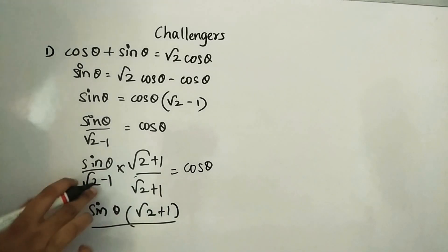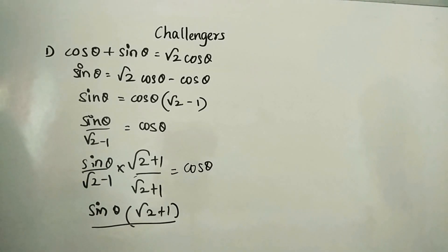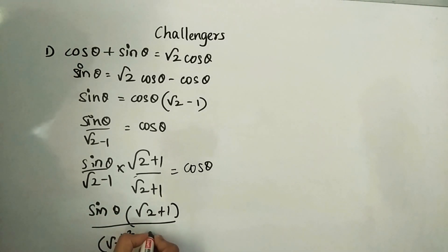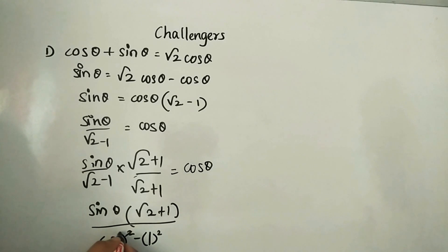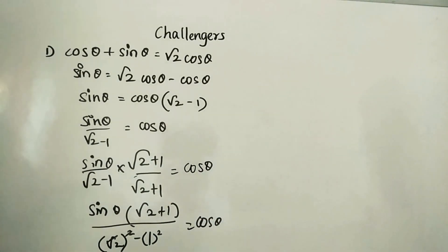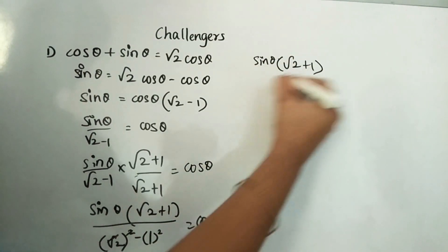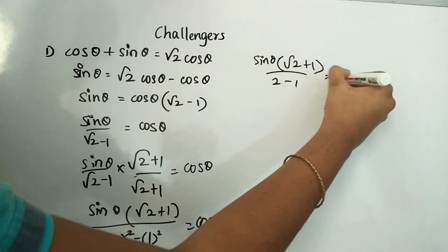We recall the formula (a − b)(a + b) = a² − b². So (√2 − 1)(√2 + 1) = (√2)² − 1² = 2 − 1 = 1. So sin θ(√2 + 1) divided by 1, which means sin θ = cos θ equals sin θ(√2 + 1).